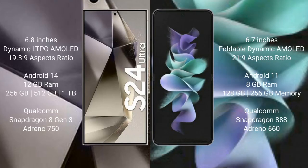Samsung Galaxy S24 Ultra comes with a 6.8-inch Dynamic LTPO AMOLED display, runs on Android 14, and comes with 12GB RAM and 256GB, 512GB, or 1TB internal storage with a Qualcomm Snapdragon 8 Gen 3 processor and Adreno 750 GPU.